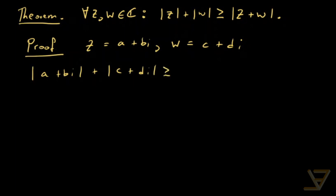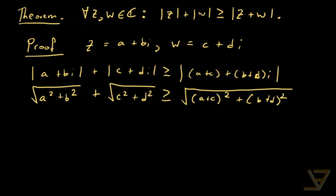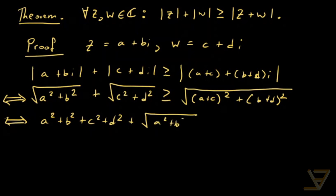Using the definition of the norm, we get √(a² + b²) + √(c² + d²) ≥ √((a+c)² + (b+d)²). We're going to use the reversible step of squaring both sides. That gives us a² + b² + c² + d² + √(a² + b²)·√(c² + d²) on the left, which must be greater than or equal to the expansion of the right side.